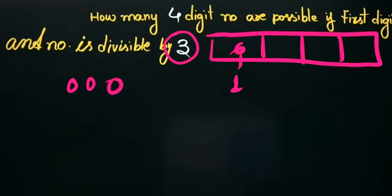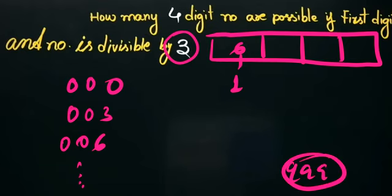It can be 6000, 6003, 6006, and so on up to 6999. This is an arithmetic progression where 999 equals 0...